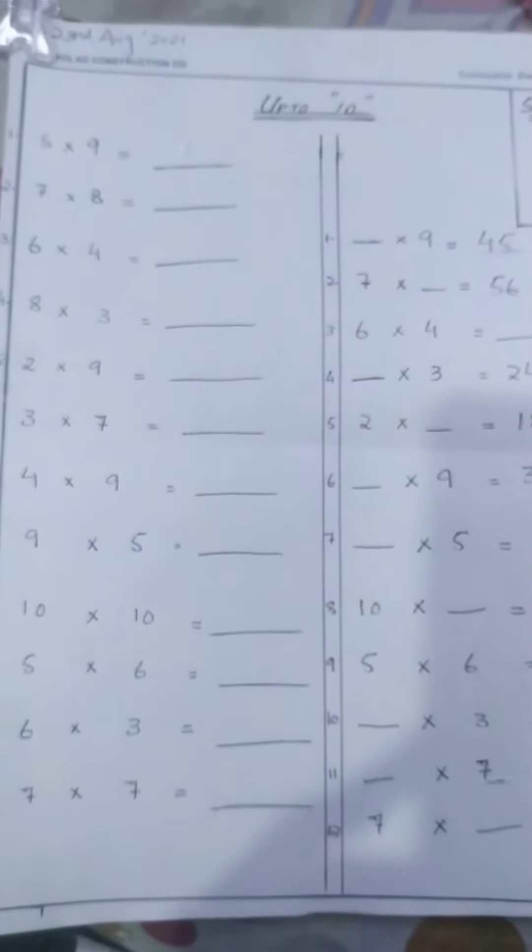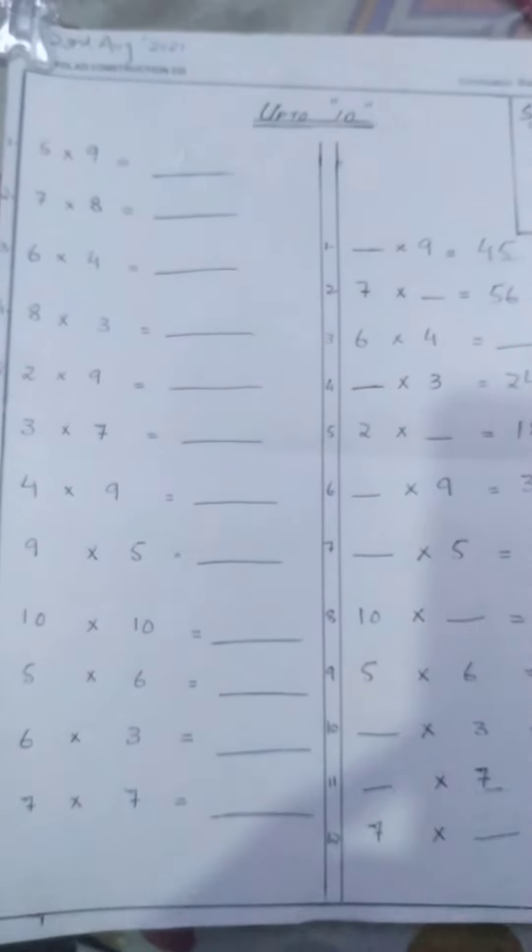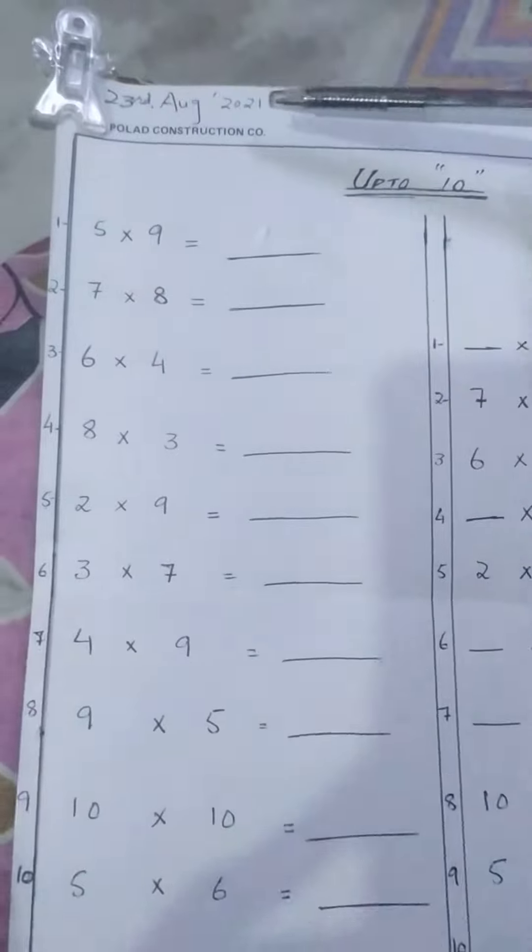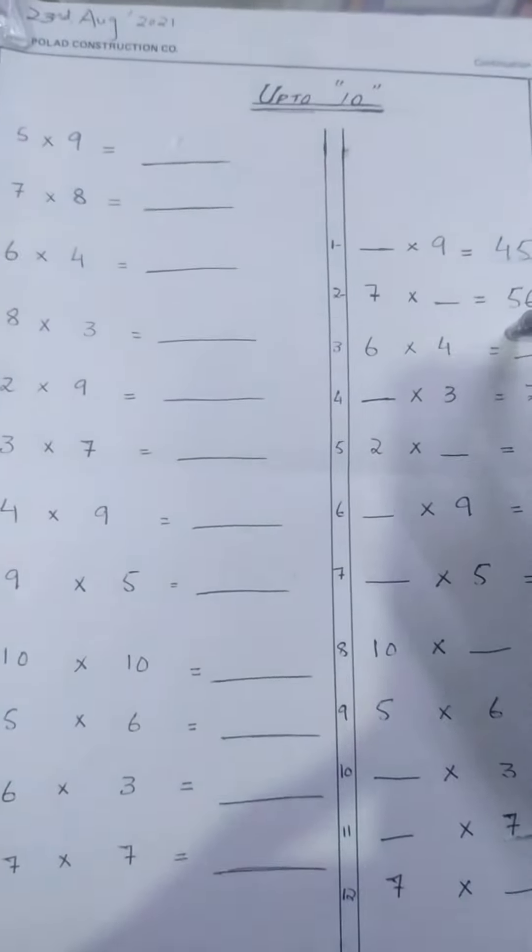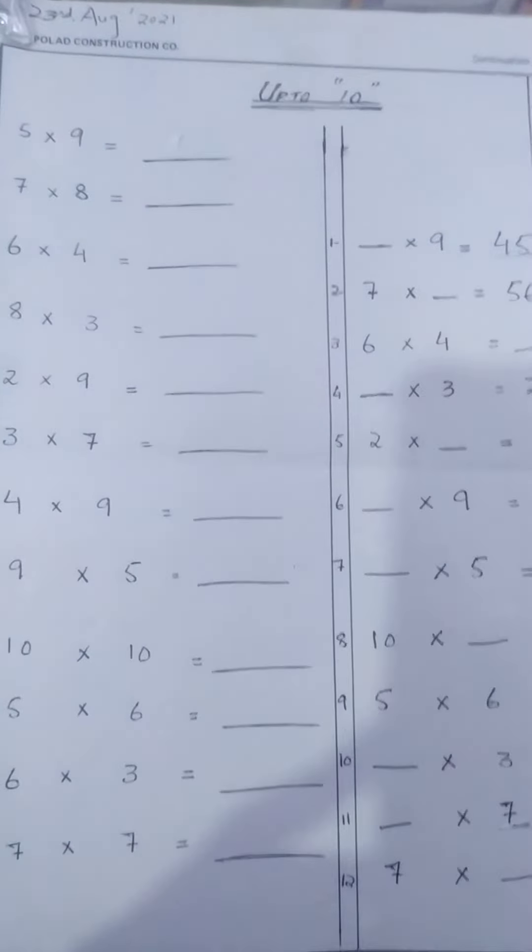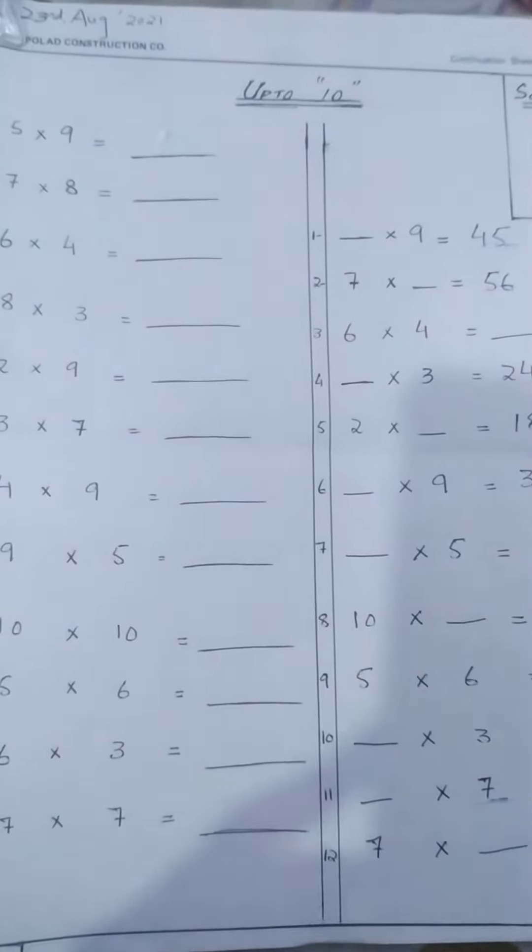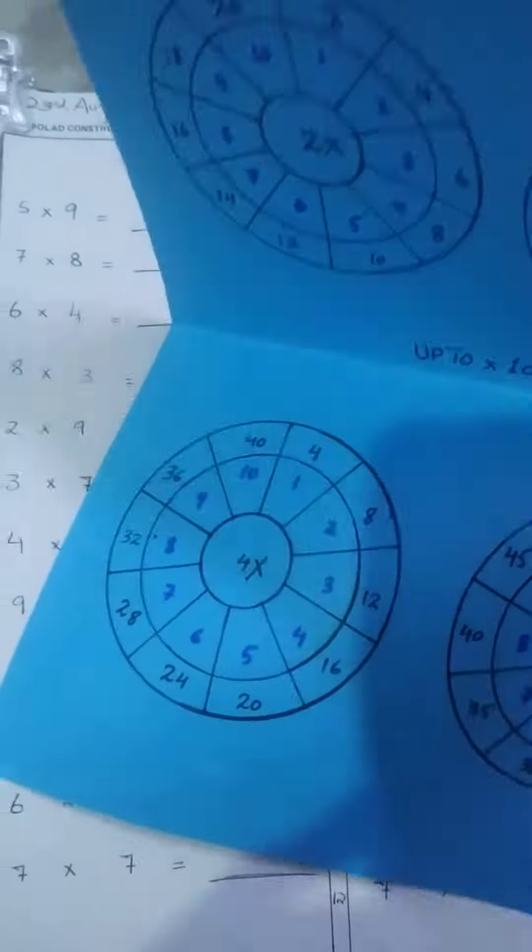Assalam alaikum students, this is your mathematics class. Today is 23rd August 2021. As you know, we were learning tables in our previous classes. We also made the table wheels up to 9 like this sheet. Right?